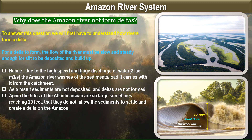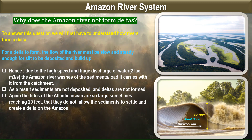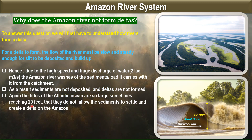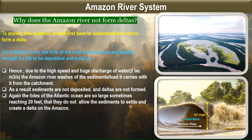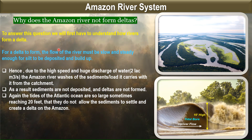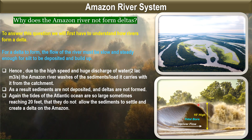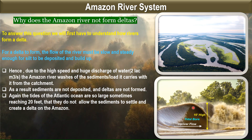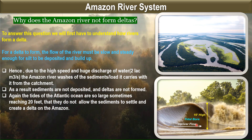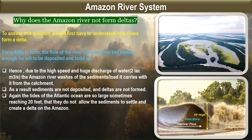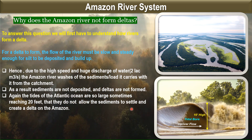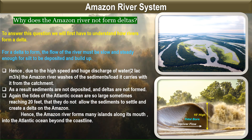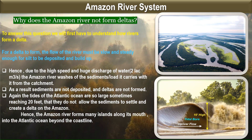There is one more reason why the Amazon cannot form deltas: the tides of the Atlantic Ocean are so large that they sometimes reach 20 feet, and they do not allow the sediments to settle and create a delta. As seen in the adjacent figure, the tide of the Amazon River is almost 10 feet, sometimes reaching 20 feet. Hence, the Amazon River forms many islands along its mouth into the Atlantic beyond the coastline.